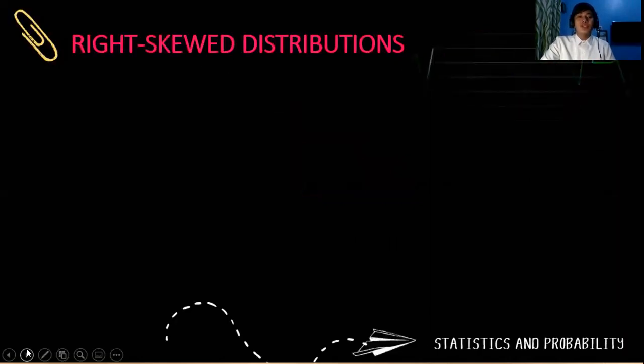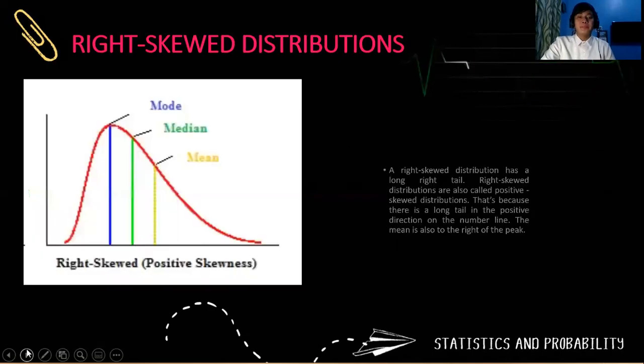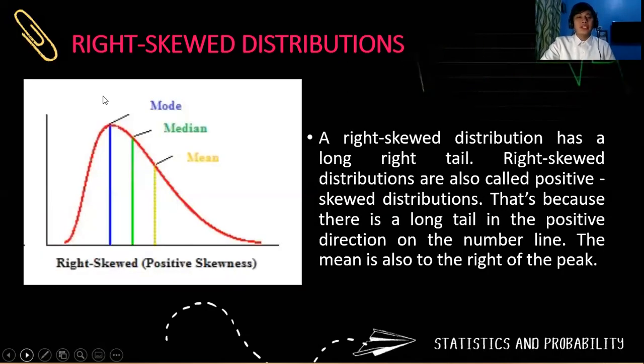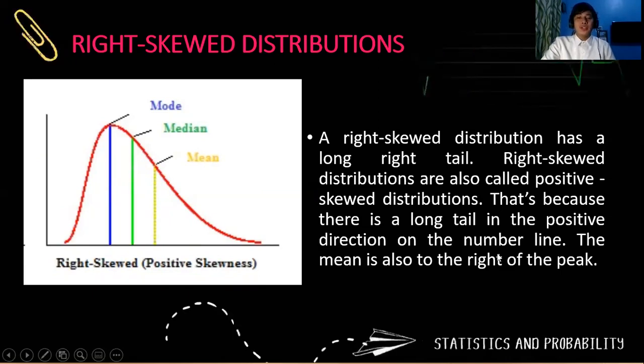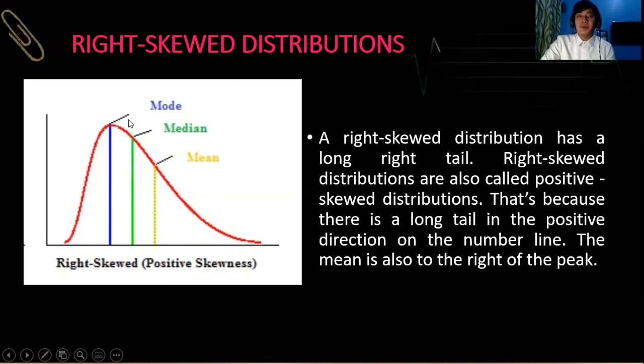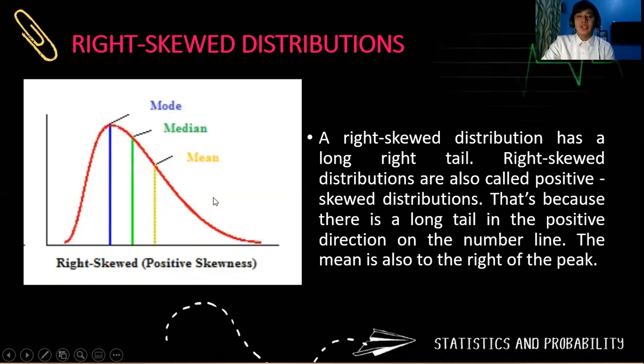So for a right-skewed distribution, notice that there is a long tail in the positive direction of the number line. The mean is also to the right of the peak, and that peak is described by the mode. So observe the graph here. That's why the right-skewed distribution is also called the positive-skewed distribution.